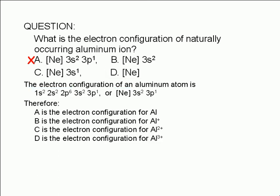So which ion is the naturally occurring ion? It turns out that the only ion of aluminum you'll find in nature has a charge of plus 3. Answer D.